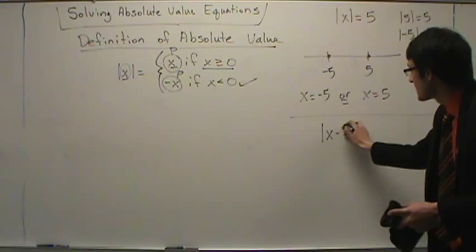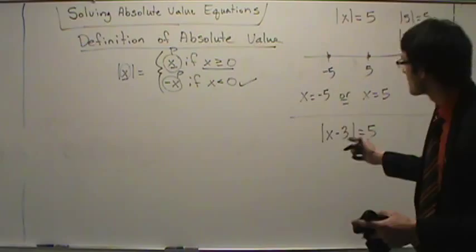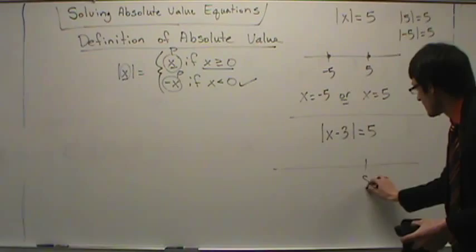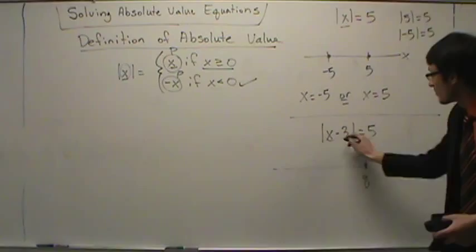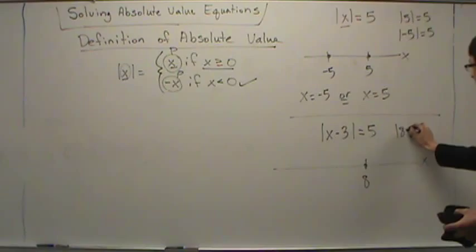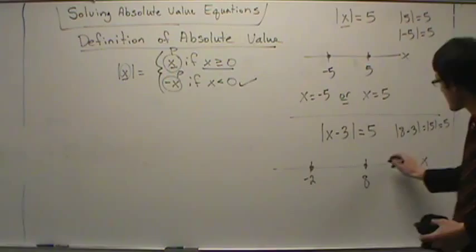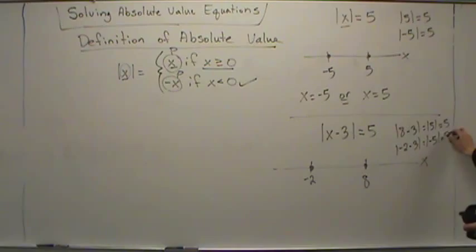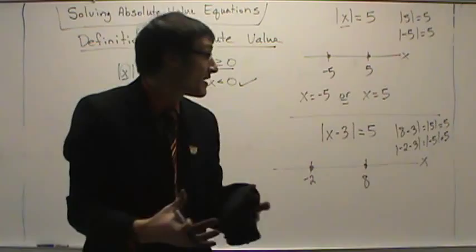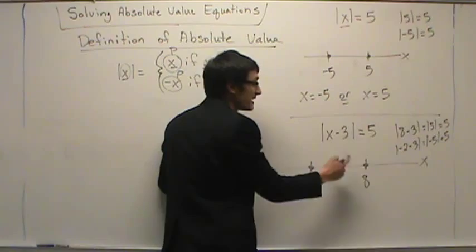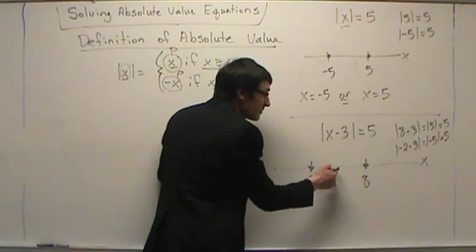See if you can figure this one out: the absolute value of x minus three equals five. Stop and think — what value of x makes this true? If you said eight, you're correct. Eight works because the absolute value of eight minus three is the absolute value of five, which is five. Negative two also works: the absolute value of negative two minus three is the absolute value of negative five, which is five. So there are two values: eight and negative two. An equation can have more than one solution.